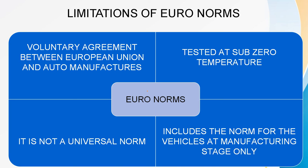There are many limitations of Euro norms. Euro norms are not followed worldwide because it is a voluntary agreement between the European Union and auto manufacturers. Many countries have framed their own laws depending upon their population, road structure, climate, or environmental problems. It is not a universal norm, and it is tested at sub-zero temperatures, which is not feasible in a country like India. It also includes norms for vehicles only at the manufacturing stage — on the road, it is not proving effective.